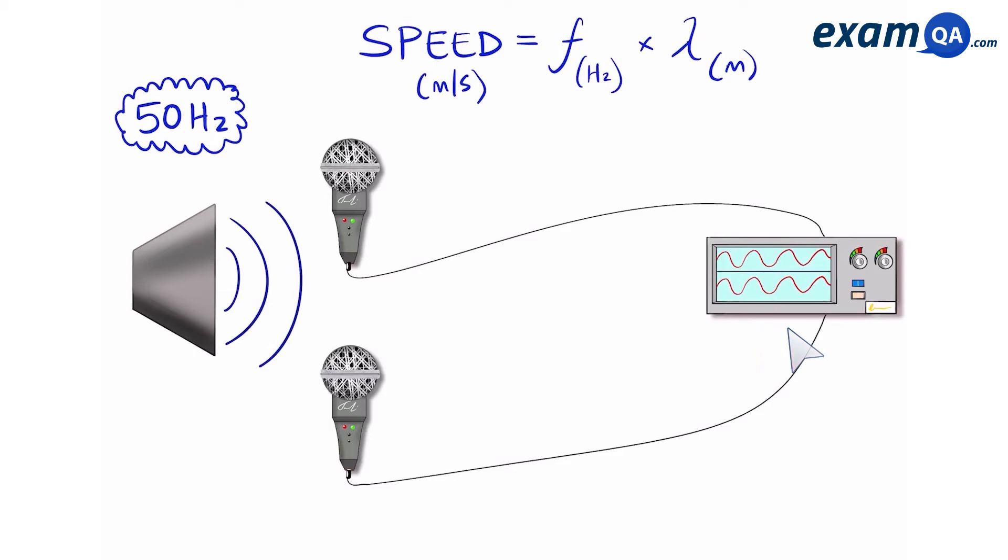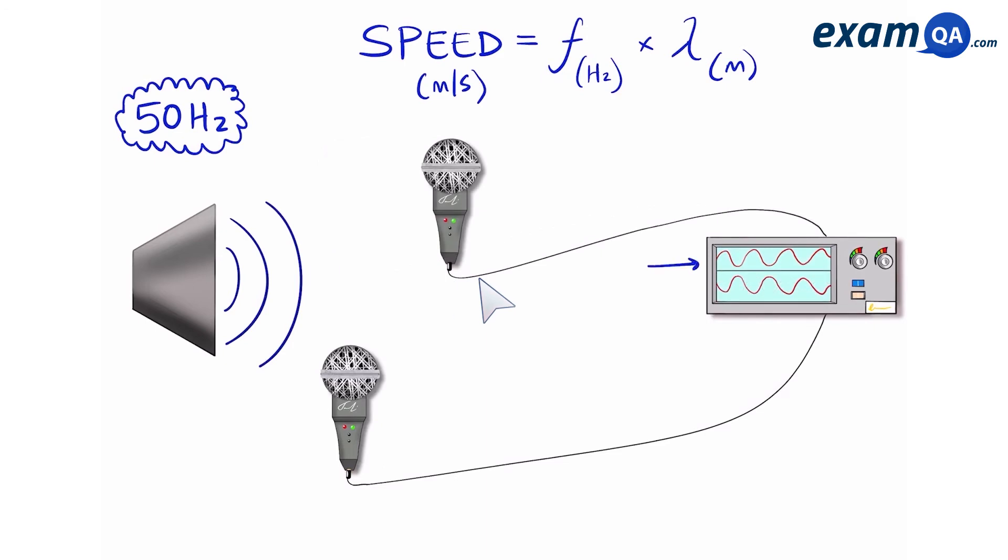Next we're going to keep one microphone where it is and begin moving the other one backwards away from the speaker. You will notice that as I'm moving the microphone away from the speaker, the two lines will now no longer be synchronized. The reason for this is that the microphones are no longer receiving the sound waves at the same time.